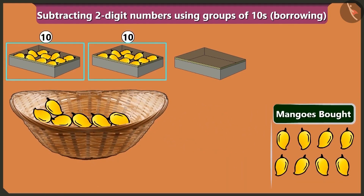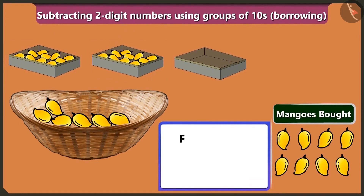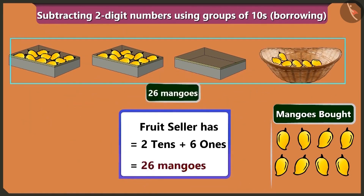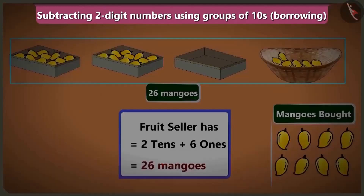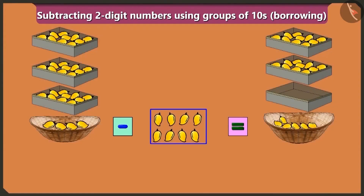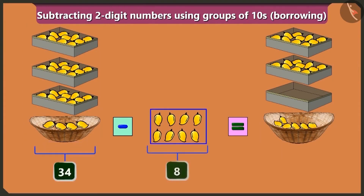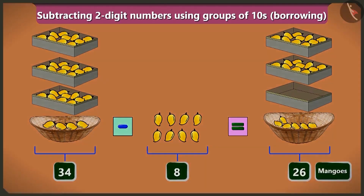Mommy, there are two boxes of ten mangoes each. And there are one, two, three, four, five and six mangoes in the basket. So the fruit seller would have two tens and six ones, means twenty-six mangoes left. Yes, so Bubbly, we subtracted eight mangoes from thirty-four mangoes. So now there are twenty-six mangoes. It means if we subtract eight from thirty-four, we would have twenty-six mangoes left.